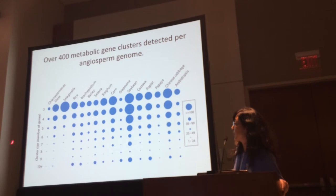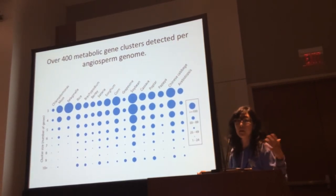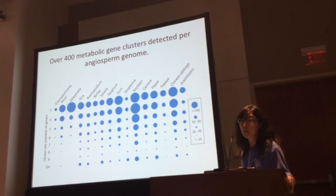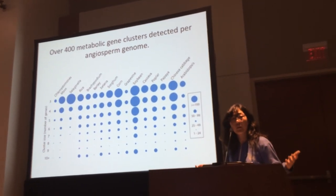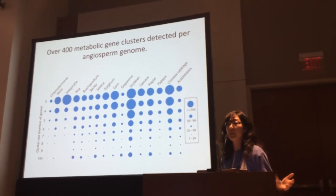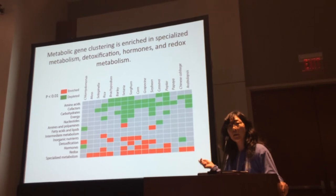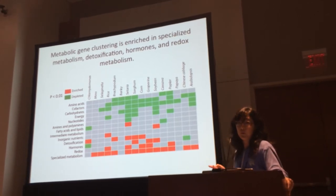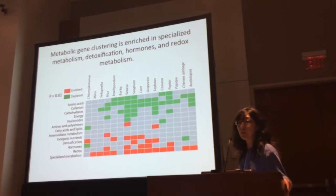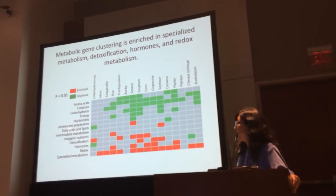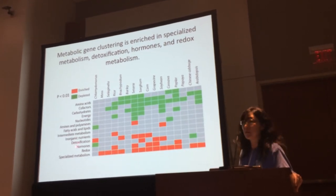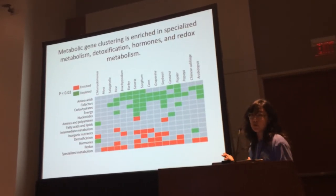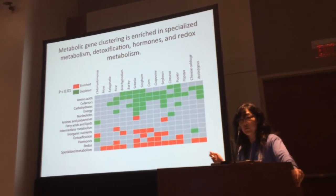Looking at cluster sizes — the number of genes found in a cluster — we find many clusters of many sizes across these species. When we asked whether any of these metabolic gene clusters are enriched in particular domains of metabolism, similar to tandemly duplicated genes, we found specialized metabolism genes to be heavily enriched in these gene clusters, as were inorganic nutrients, detoxification, hormones, and redox genes. The pattern of enrichment for gene clusters is more lineage-specific than for tandemly duplicated genes, but still shows an interesting pattern.